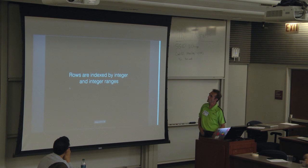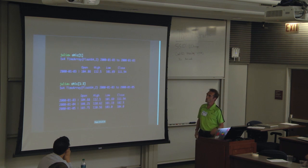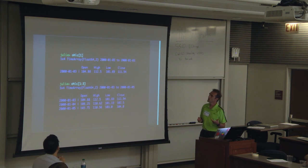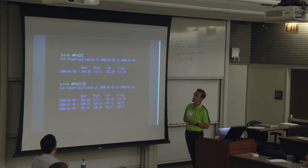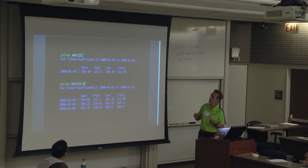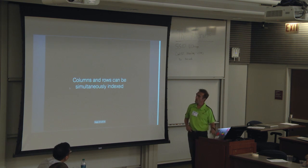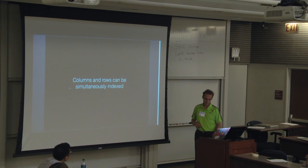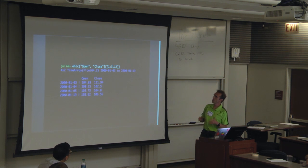We can also index rows by integers and integer ranges. So the first observation would be 1, and the first through third observation would be 1:3. And you can also simultaneously index those. So if you want to get open and close, and just want the first through third observation plus the 12th observation.